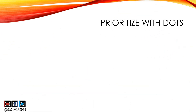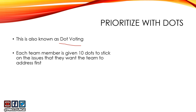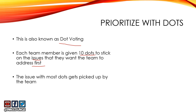Now there's another tool that can be used when you have your data, which is called prioritize the dots. This is also known as dot voting, and it's pretty simple. This is a democratic way of deciding what the team should focus their energy on. Each team member is going to get 10 dots to stick on the issues that they want the team to address first. Remember, when you use the fishbone diagram you already have a list of issues — now your team members have 10 dots and they can stick those dots on whichever issue they choose.